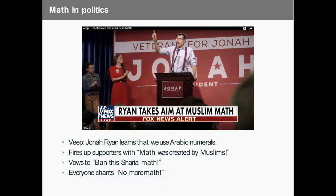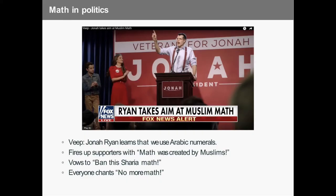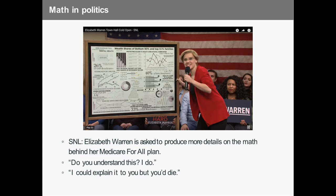Do you know the show Veep? Veep's bread and butter is beating the carcass of American politics. There's this character Jonah Ryan, who is like the composite of everything that's bad with American politics — and he's also really stupid. Someone tells him that the numbers we use are actually Arabic numerals, and he is livid. He goes to a rally and says, 'Math was created by Muslims — we've got to ban this Sharia math!' And he leads the rally in chanting 'No more math!'